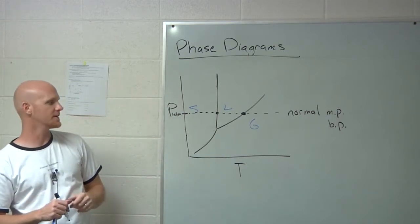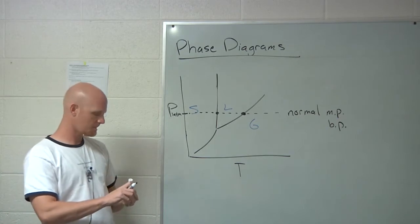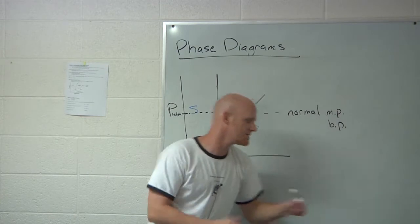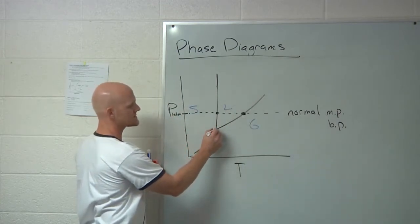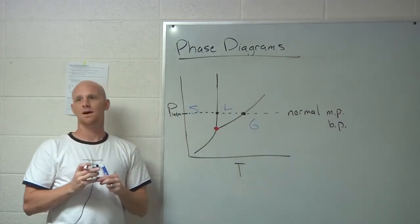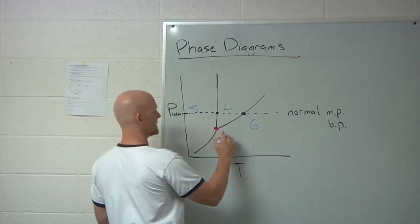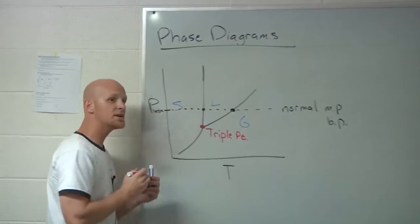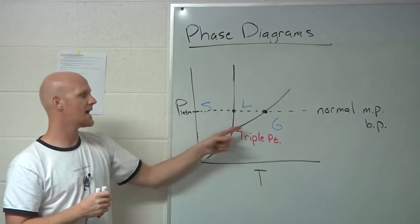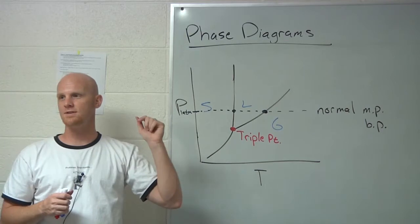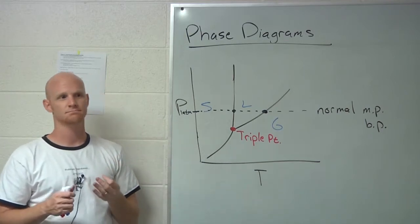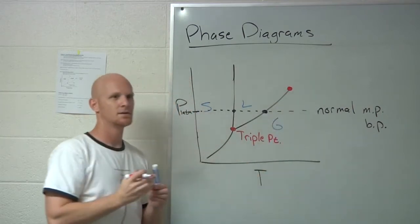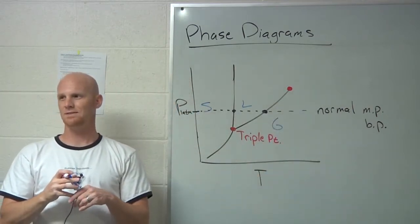Anywhere technically along this line between solid-liquid could be a melting point; anywhere along this line of equilibrium between liquid and gas could be a boiling point. But specifically the points that also correspond to one atmosphere are the normal melting point and the normal boiling point respectively. A couple other points we got to identify - one is this point right here, the triple point. Why do they call it the triple point? You've actually got three phases in equilibrium together: solid, liquid, and gas.